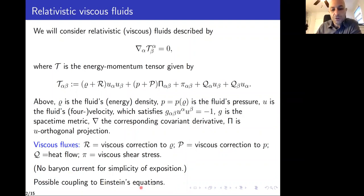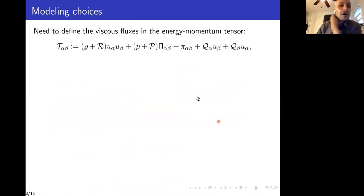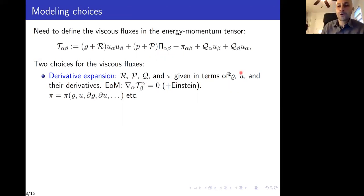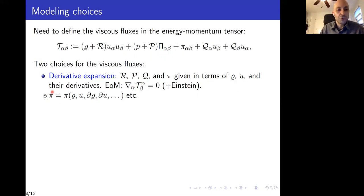Of course, you also want to understand divergence of T equals zero, and that's coupled to Einstein equations. If you want to define your theory, you need to define what the viscous fluxes are. There are now two main philosophies. One is a derivative expansion, where the viscous fluxes are given in terms of the hydrodynamic variables — in this case the density and velocity and their derivatives. The equations of motion are just divergence of T equals zero, possibly coupled to Einstein equations, and each viscous flux is a known expression in U, rho, and their derivatives.